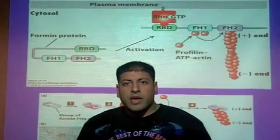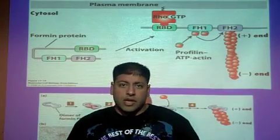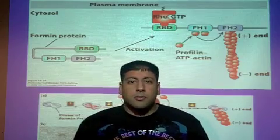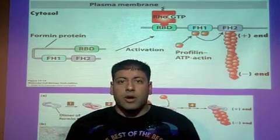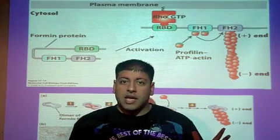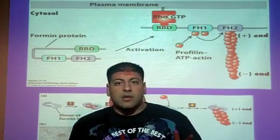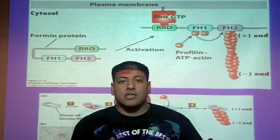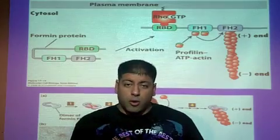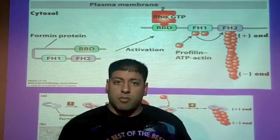Today we're going to be talking about another regulated way that actin filaments get polymerized. Remember, the first regulated way involved three proteins — profilin, cofilin, and thymosin beta-4 — regulating when G-actins could be added to a pre-existing actin filament at the plus end with the help of profilin and thymosin beta-4. The minus end, full of ADP-G-actins, was broken down and those G-actins recycled due to cofilin. Now we're going to look at another way actin filaments get polymerized or built up.